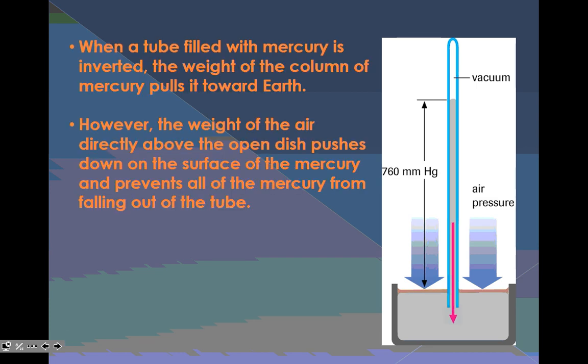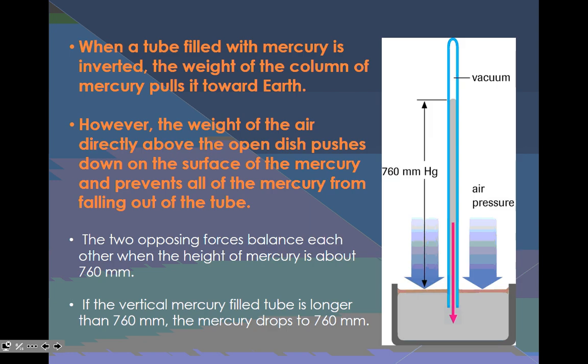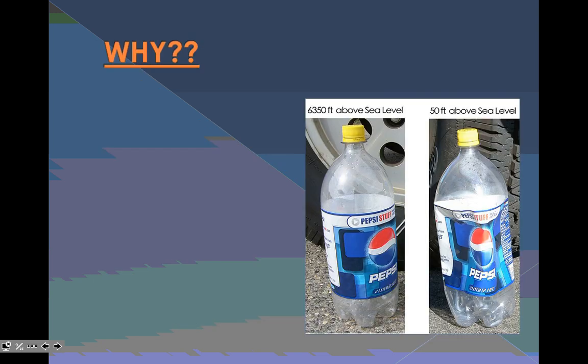So when a tube filled with mercury is inverted, the weight of the column of the mercury pulls it towards earth. However, the weight of the air directly above the open dish pushes down on the surface of the mercury and prevents all of the mercury from falling out of the tube. Basically, this is just showing you how a pressure gauge works in terms of using mercury. You're not going to be tested on this, this is just some background info. The two opposing forces balance each other when the height of the mercury is about 760 millimeters at zero degrees, kiddos, okay, because it's at STP.